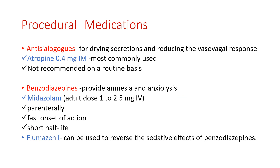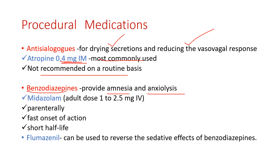Pre-medication begins with an antisialogogue — atropine 0.4 mg IM — the most commonly used agent. Its indication is for drying secretions and reducing the vasovagal response, though it is not routinely recommended. Benzodiazepines are also used; they produce amnesia and anxiolysis.